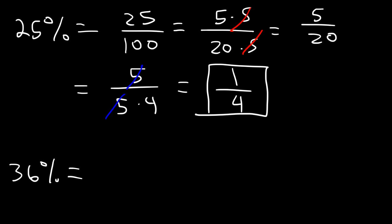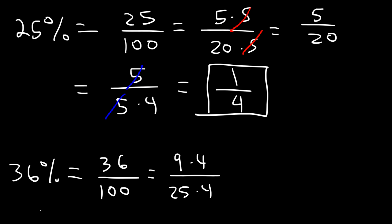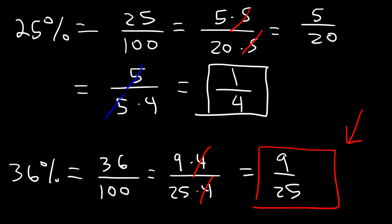Now let's do the same thing with 36%. Let's write it as 36 over 100. Now 36 is 9 times 4, and 100 is 25 times 4, so we can cancel a 4 and we're left with just 9 over 25. And that's the answer — 36% is equivalent to 9 over 25. So now you know a simplified way of converting percentages into fractions.